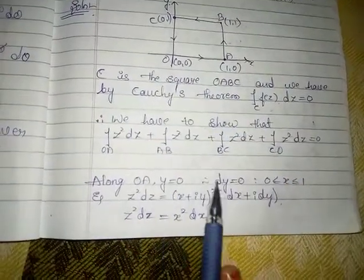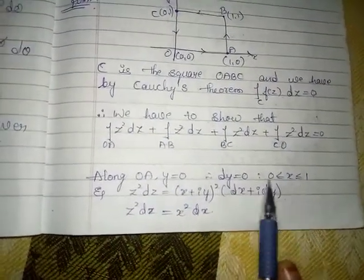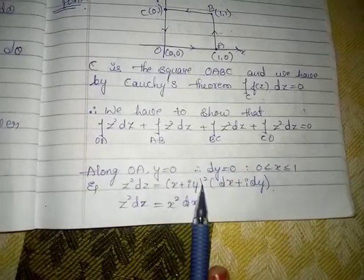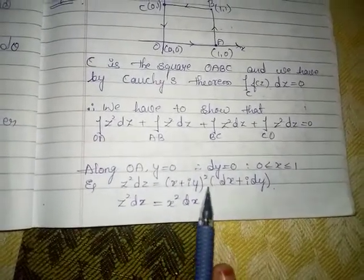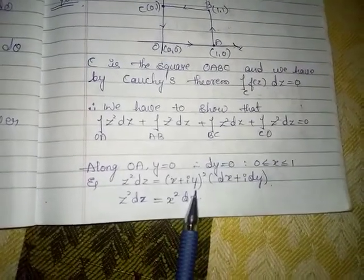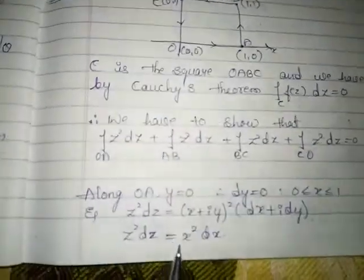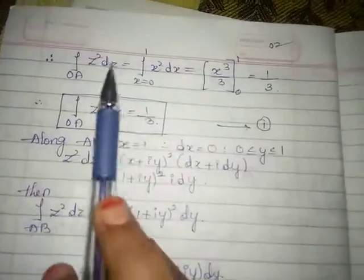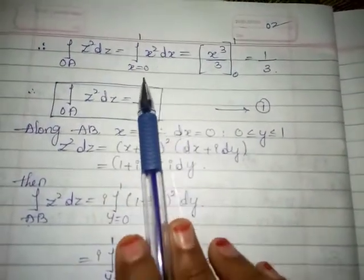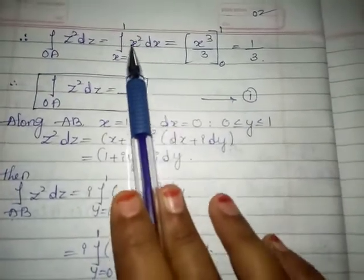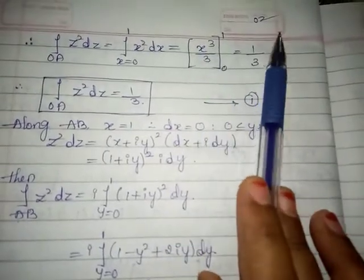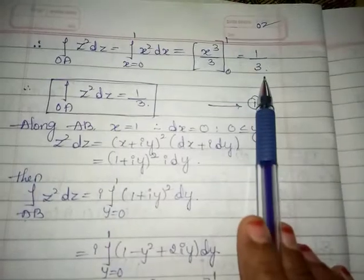Along OA, y = 0, therefore dy = 0, and x lies between 0 and 1. So z² dz = x² dx. Therefore the integration over OA of z² dz equals the integration from 0 to 1 of x² dx, which gives x³/3 with limits from 0 to 1. The value of this integral is 1/3. Name this equation 1.